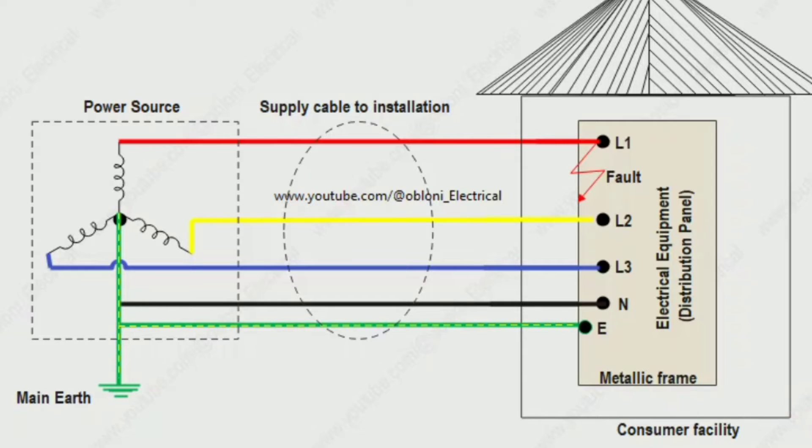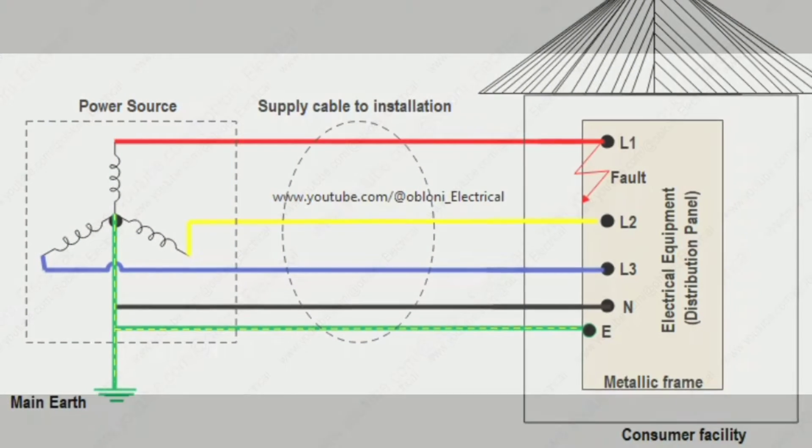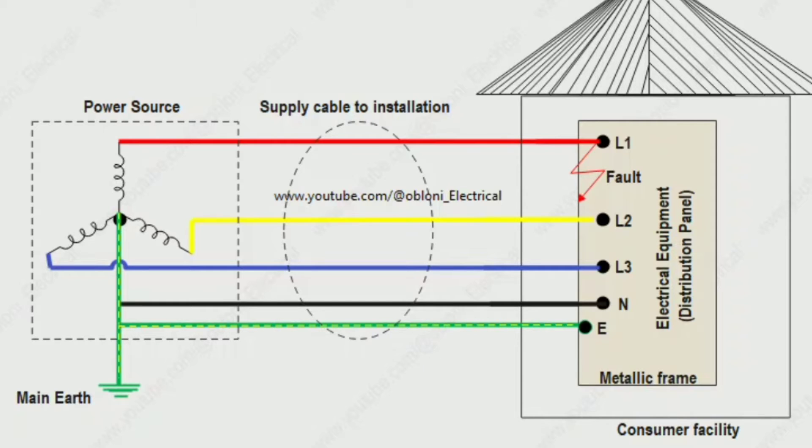Very well, let's take another example. Let's take a look at what will happen when there is a direct short between live and earth in a TNS system. Earth here implies either the circuit protective conductor or a metal part of the wiring. And please, very important, if you have not yet watched my video on different types of earthing systems, you can find a link to that video right under this one. That video will help you to understand this topic very well.